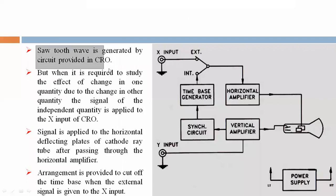A saw tooth wave is generated by the circuit provided in CRO. But when it is required to study the effect of change in one quantity due to the change in other quantity, the signal of the independent quantity is applied to the X input of CRO.